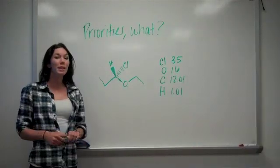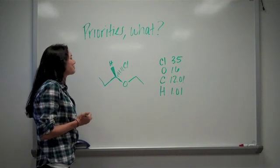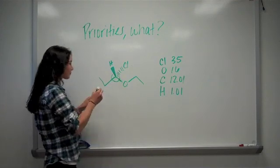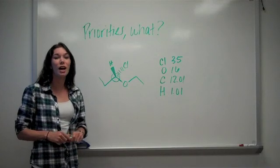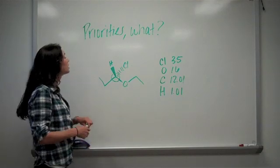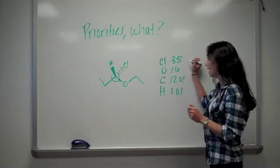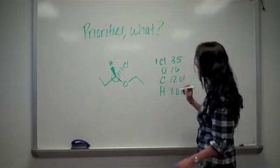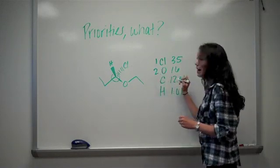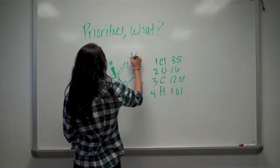Before we get into R and S configurations, we want to talk about priorities. First, you want to establish where your chiral center is. Then, you want the highest priorities to be given to the highest atomic number versus the lowest priorities given to the lowest atomic number. So you'll get your atoms attached to your chiral center — we have chlorine, oxygen, carbon, and hydrogen. Chlorine has the highest atomic number, so it's given priority number one. Then oxygen has the second highest priority, so it's given number two, followed by carbon which is given three, and then lastly hydrogen, which is given four.